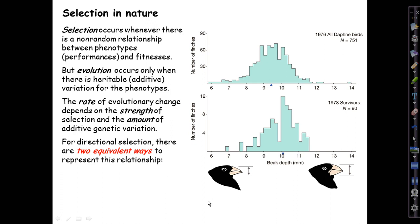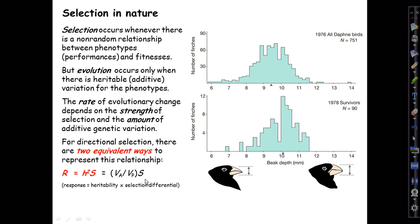Here's the breeder's equation we saw last time. The response to selection, measured as the change in the mean trait value, will be equal to the heritability — little h-squared — times the selection differential S. The narrow-sense heritability is the additive genetic variance as a fraction of the total phenotypic variance, Va over Vp, then times S, the selection differential.